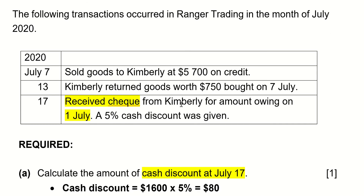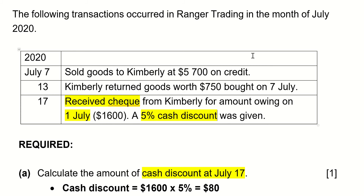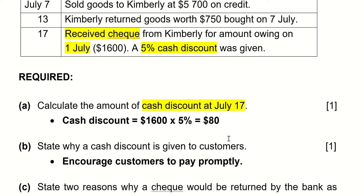So you received a check from Kimberly for the amount owing on the first of July, which is $1,600, and it was informed to you that a 5% cash discount was given. That's why the cash discount is calculated as $1,600 times 5% equals $80. The theory is straightforward — I'm going to leave you to read it on your own.